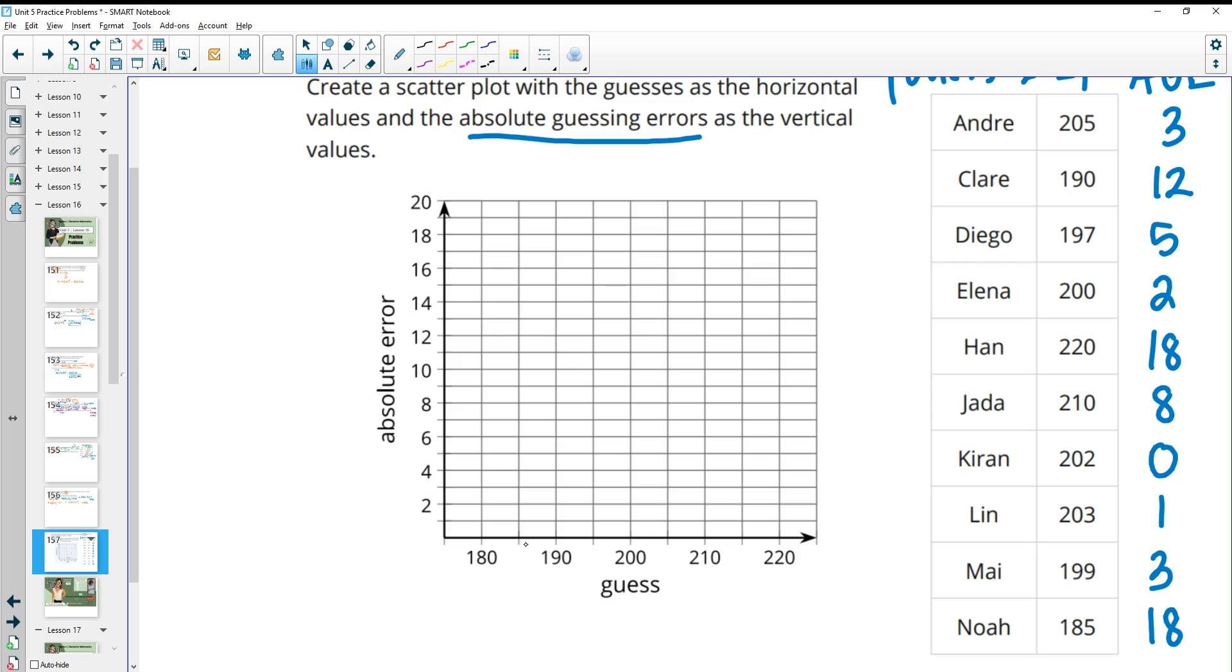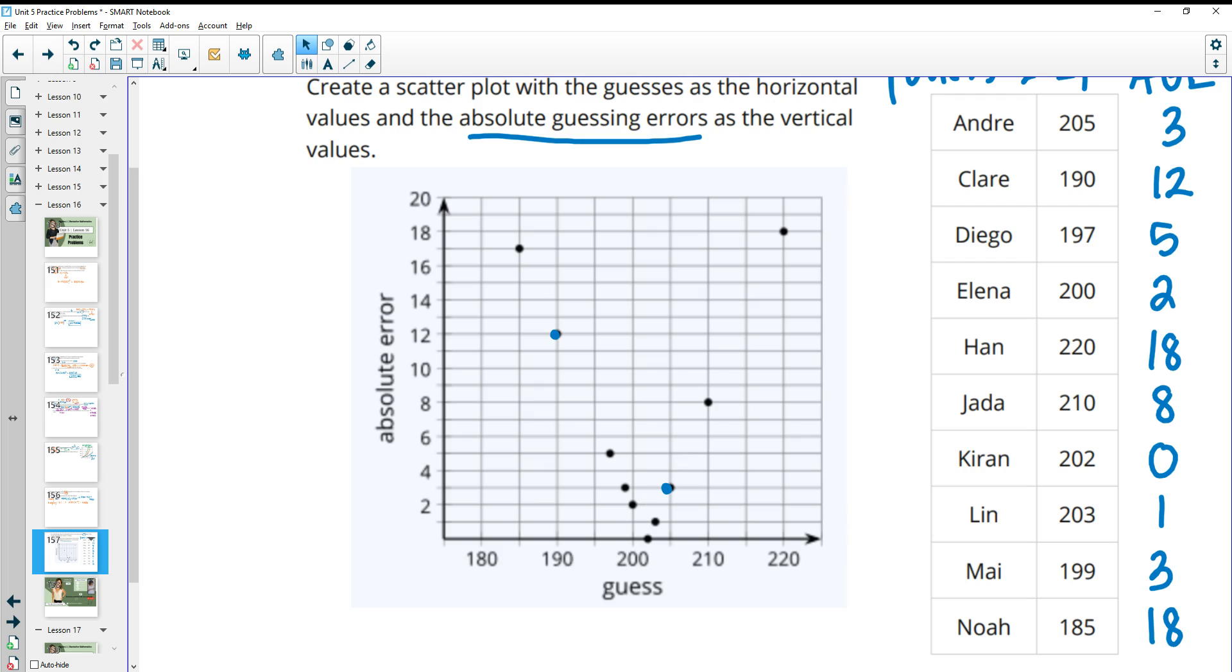Then you're going to plot these. So I'm just going to plot a couple of these and then I'll show you the answer. So if we go to 205, and these are counting by fives, right? 180, 185, 190, 195, 200, 205, we want to go up to 3. At 190, we want to be at 12. And you would just plot all of those and it's going to look like this.